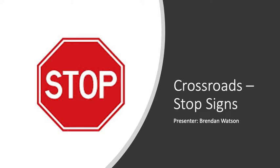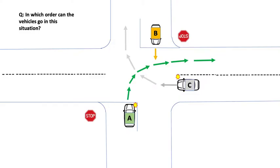Hi, this is Brendan from Watto Training and in this tutorial we take a look at crossroads with stop signs and we'll take a look at a case study of how to negotiate them. The question in this tutorial is: in which order can the vehicles go in this situation? We've got vehicle A, B and C. Have a think about what order you think they would go, and then at the end of the tutorial we'll come back and check the answer.